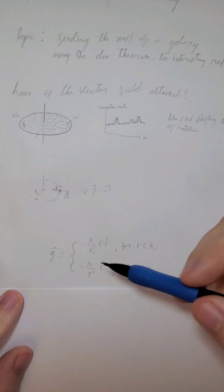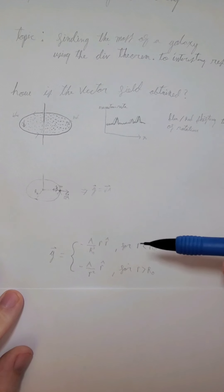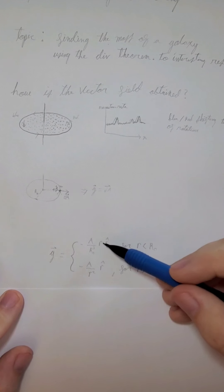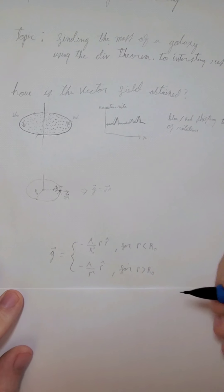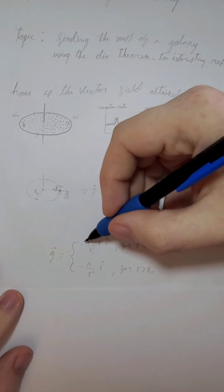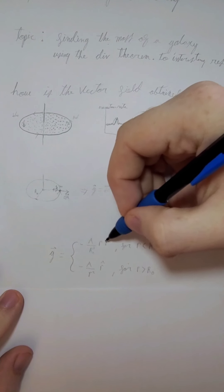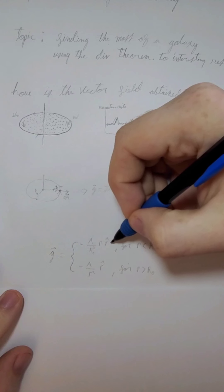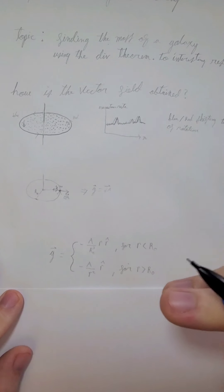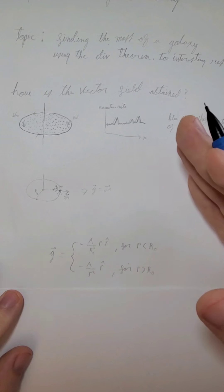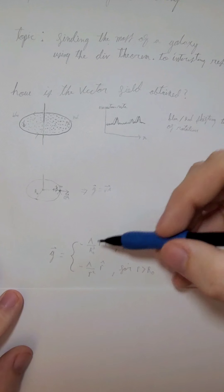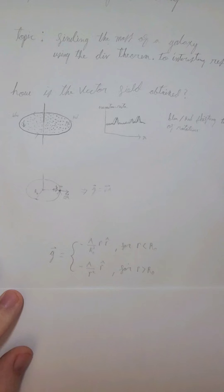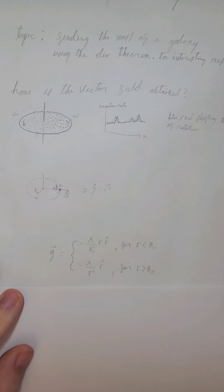r cubed and an r on top, that cancels just to give you an r squared on the bottom. Intrinsically, this part makes sense. The negative, because the r̂, the unit vector, is saying it's always directly outward. That's the direction of gravity. However, you know that gravity pulls inward only. That's why we have a negative. The unit vector points out, so you have to flip the sign to have it point inward towards the center of mass.